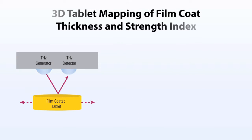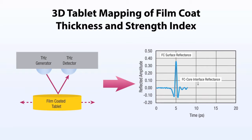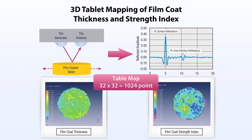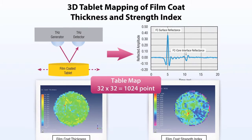Three-dimensional mapping is achieved by recording a trace for each discrete spot in the array covering the tablet surface. The 3D map shows the spatial uniformity of film coat thickness, and additional parameters such as film coat strength can also be derived from the same data set.